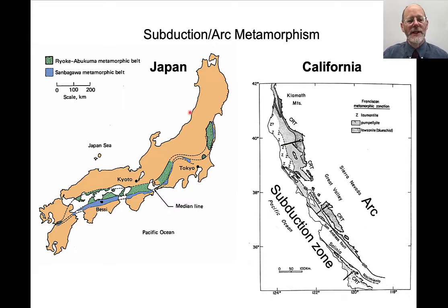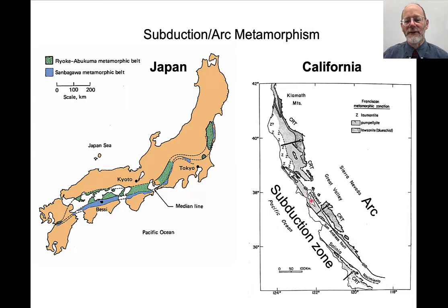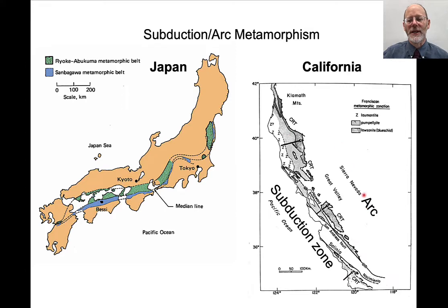For example, in Japan there is the Sanbagawa metamorphic belt — high-pressure, low-temperature subduction zone rocks — and the Abukuma metamorphic belt, which is high-temperature, low-pressure arc rocks. In the western United States, there is the Franciscan formation near San Francisco, consisting of high-pressure, low-temperature rocks, paired with the Sierra Nevada arc to the east, which contains low-pressure, high-temperature rocks — again demonstrating the paired metamorphic belt relationship.